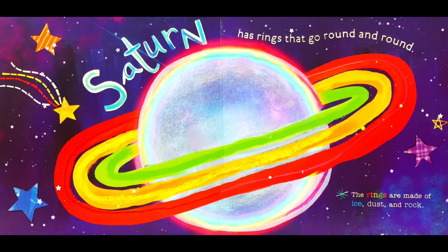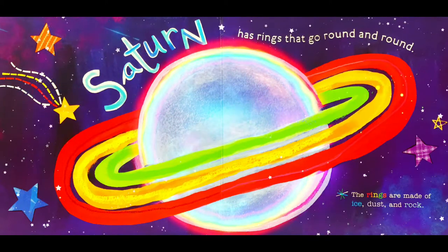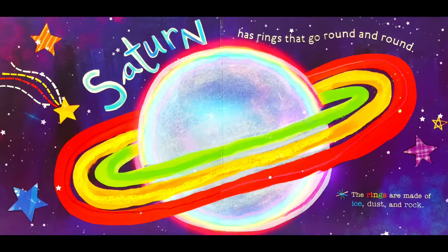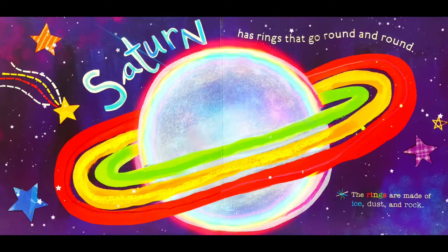Saturn has rings that go round and round. The rings are made of ice, dust, and rock.